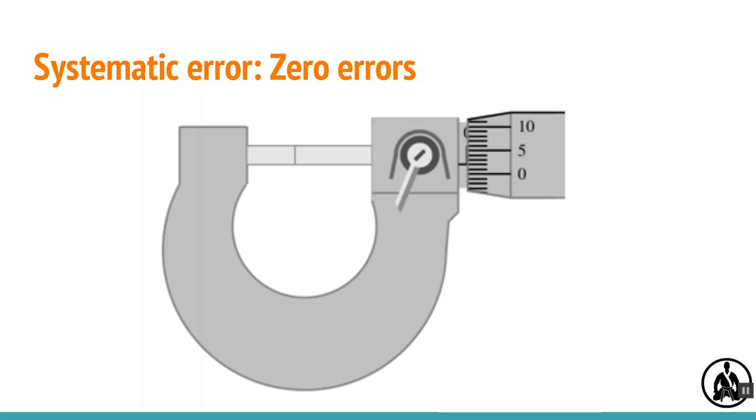This micrometer has a zero error of 0.02 millimeters. Zero errors do have a fixed size and so are easy to correct for.